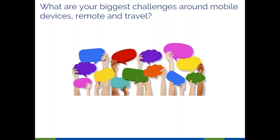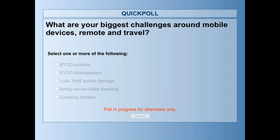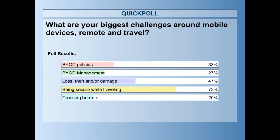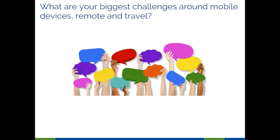Final poll: what are your biggest challenges around mobile devices, remote and travel? Options include BYOD policies, BYOD management, loss/theft/damage, being secure while traveling, working remotely, and crossing borders. Being secure while traveling is the biggest concern, followed by loss, theft, and damage. A Prey Project and having passwords and encryption on your devices are huge steps toward protecting that information.